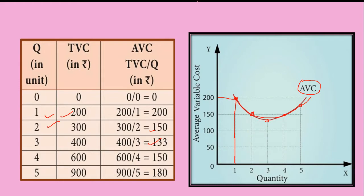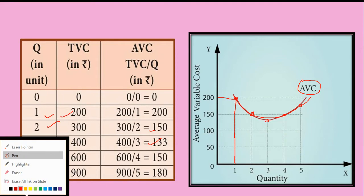The characteristics of average variable cost: AVC declines initially and then increases with the increase in output. The AVC curve declines, reaches a minimum point, and then rises. AVC declines up to a point and moves upward steeply due to the law of returns. The AVC curve is a U-shaped curve.